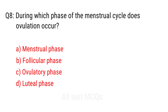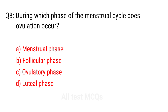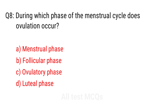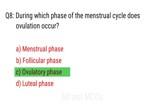Q8. During which phase of the menstrual cycle does ovulation occur? The right answer is option C: Follicular phase.